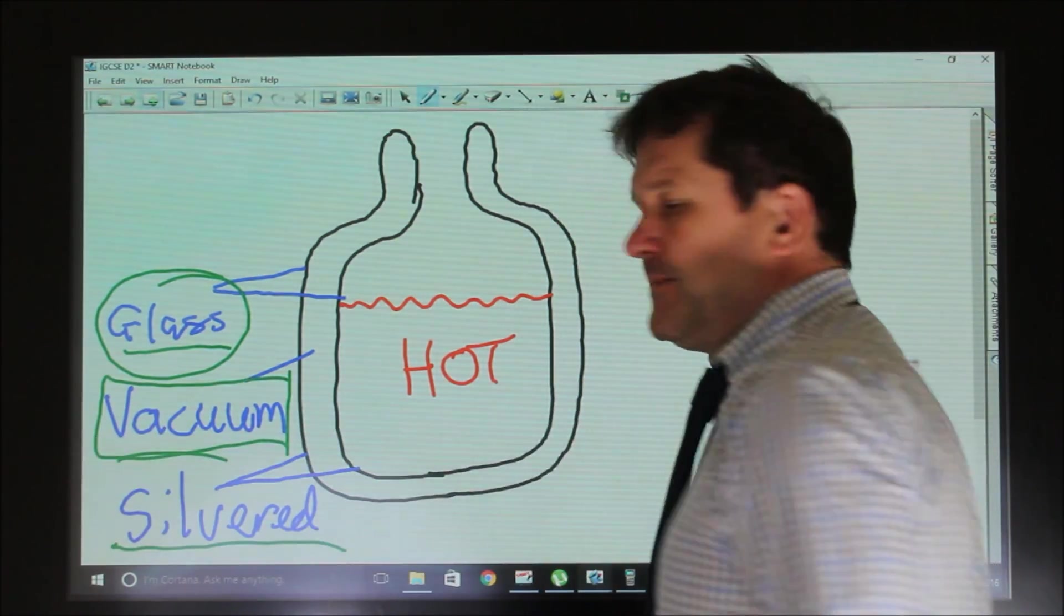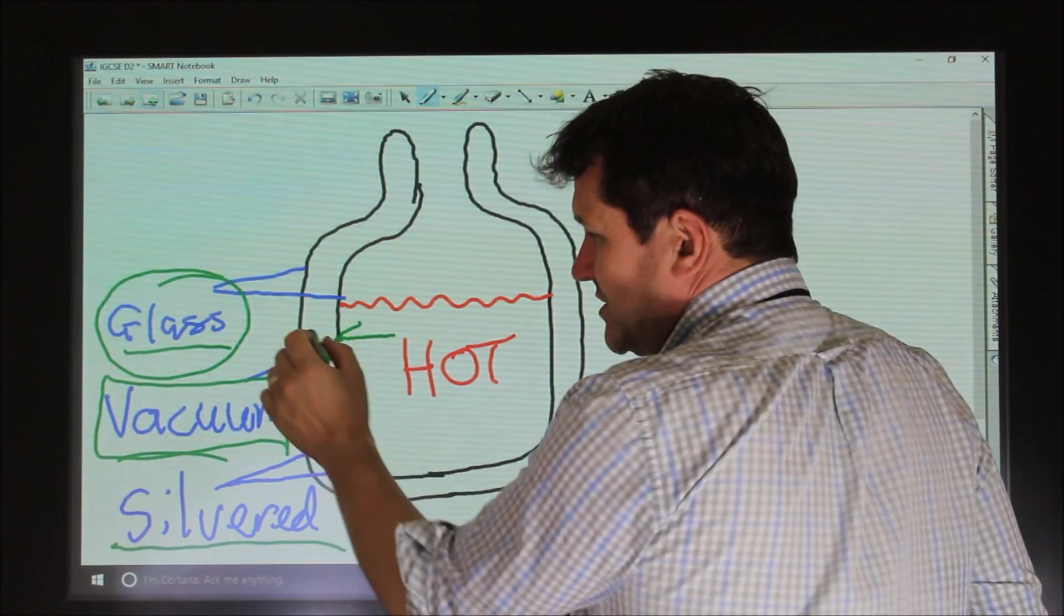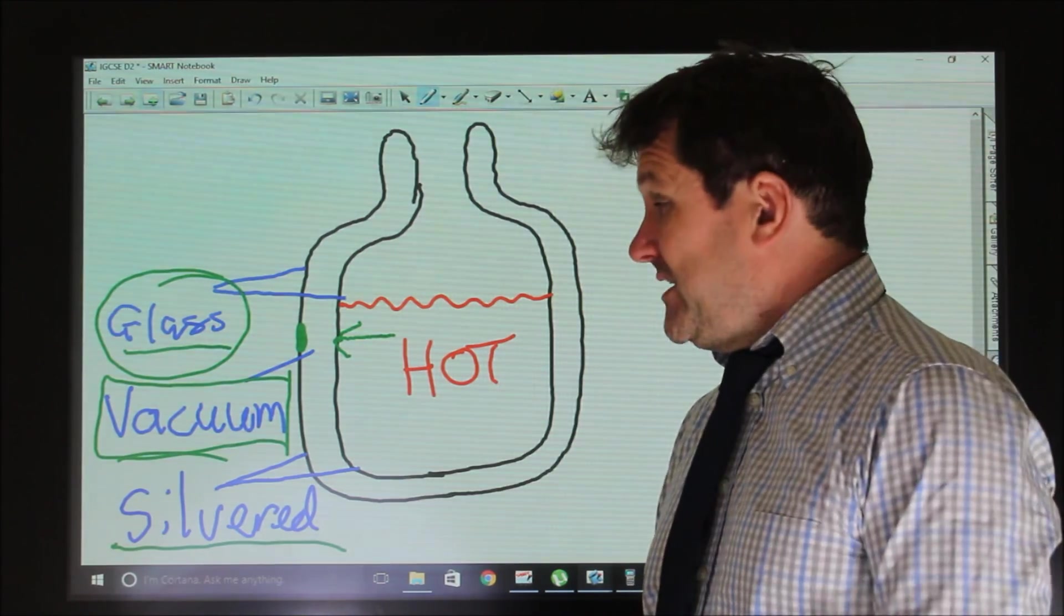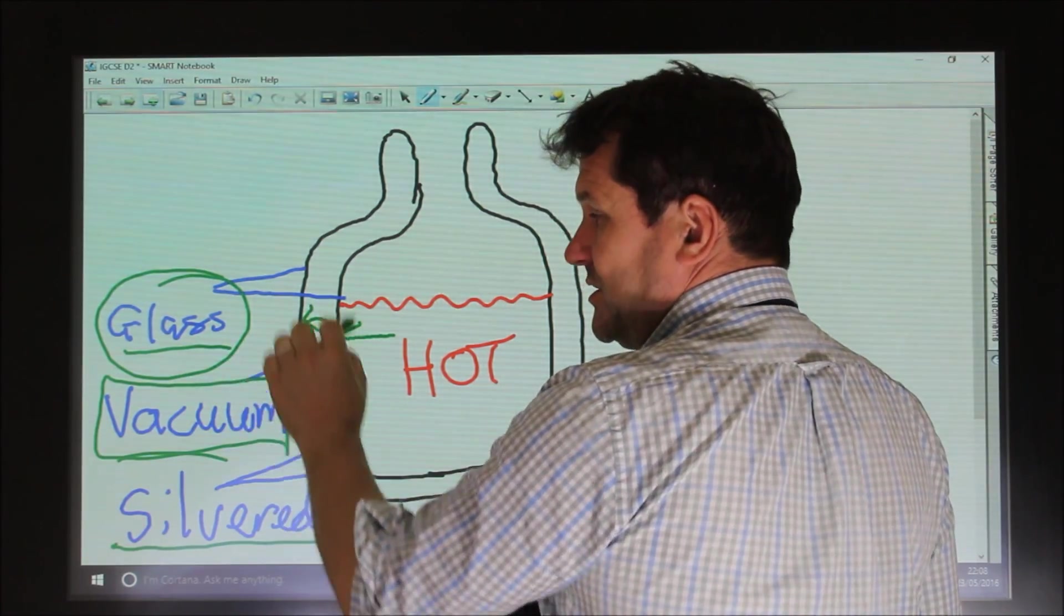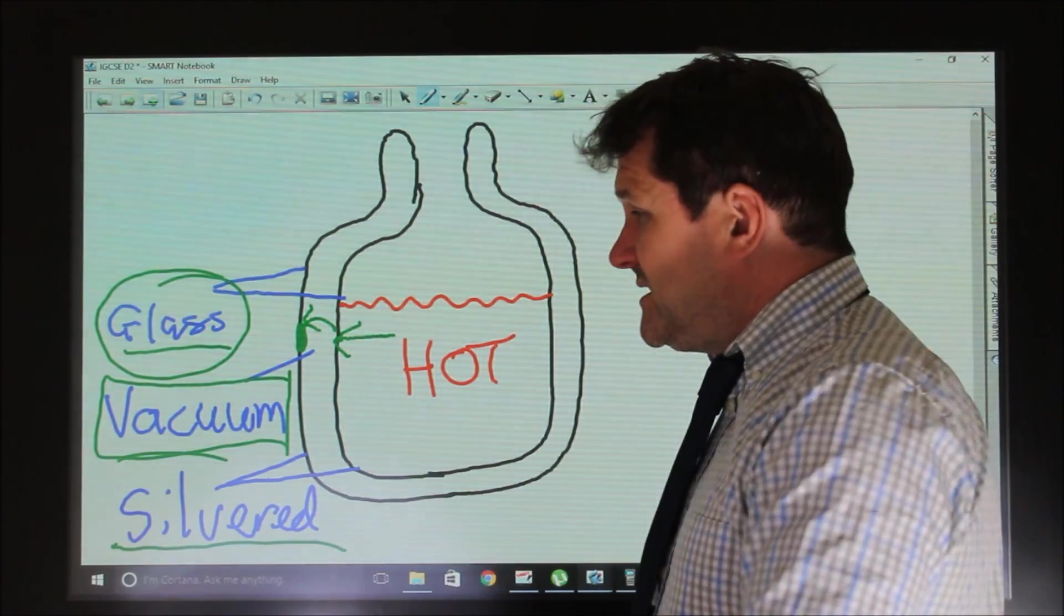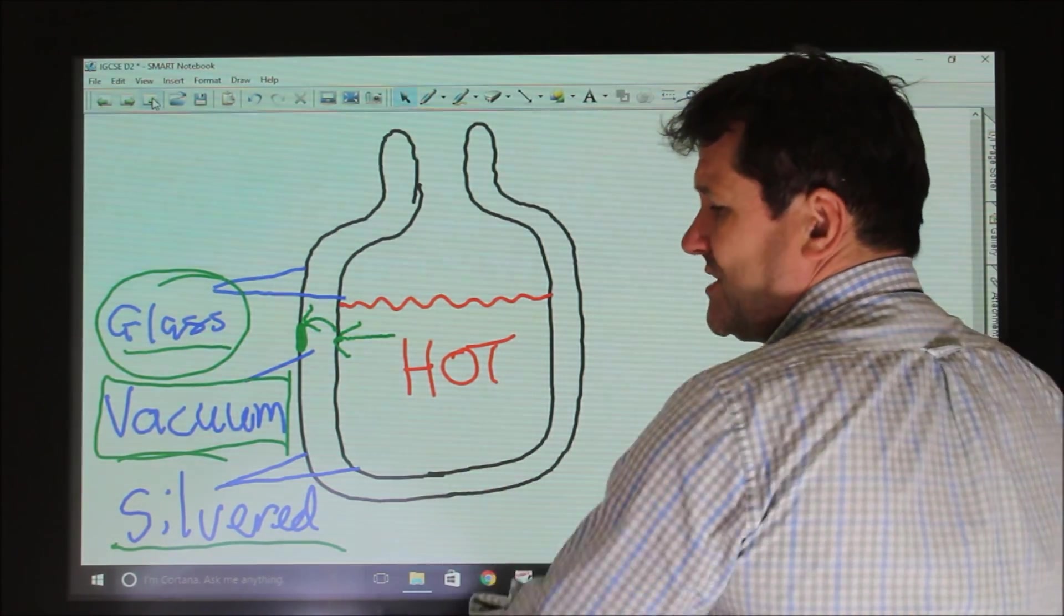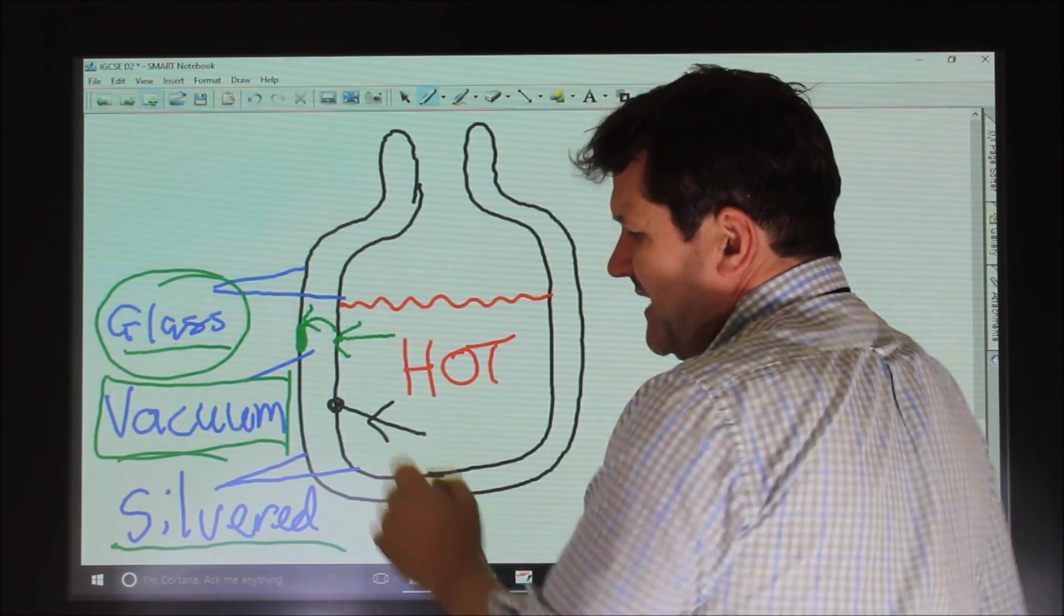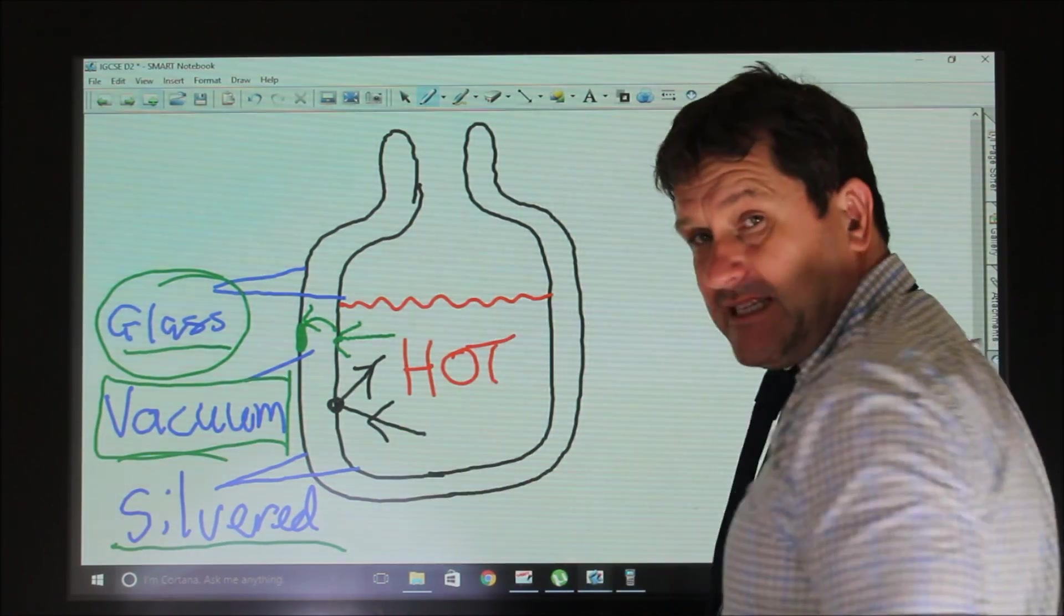We have a vacuum. The vacuum means that thermal energy from inside cannot cross to this wall by conduction or convection. Conduction requires a medium through which to travel. Convection would require air particles to circulate inside the gap. The fact that this is a vacuum means that no particles are present and therefore it stops conduction and convection.